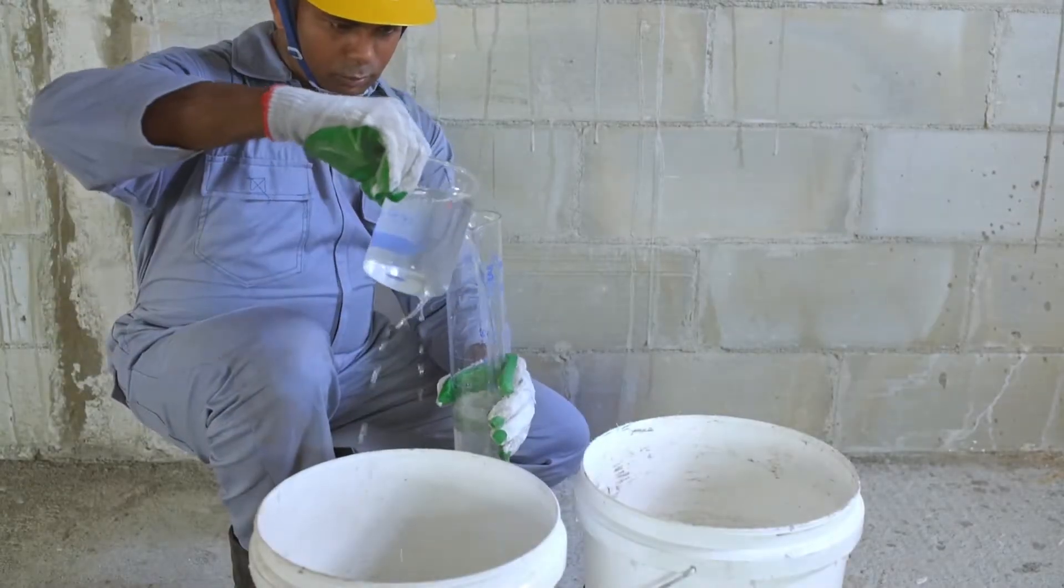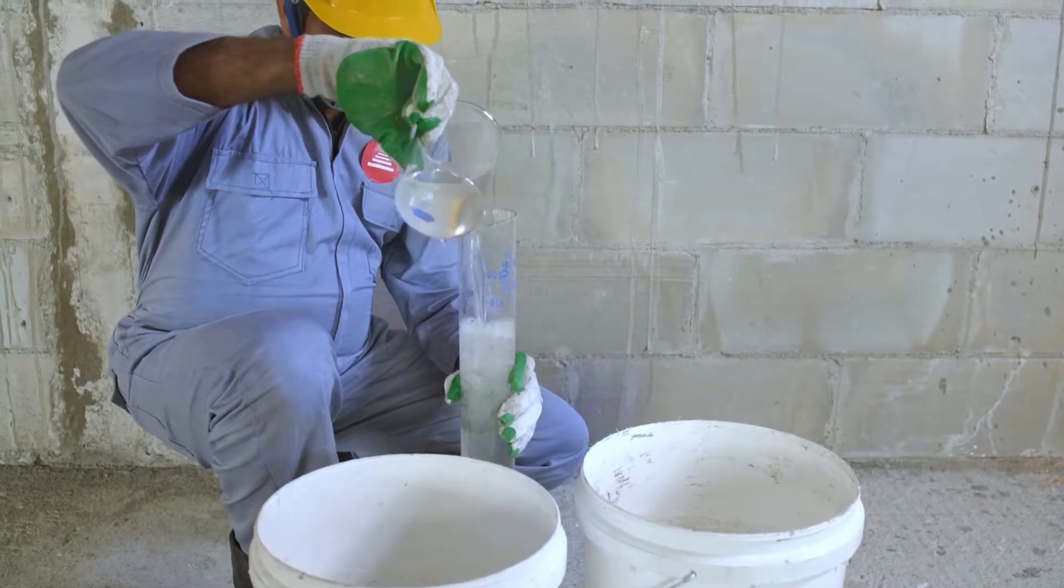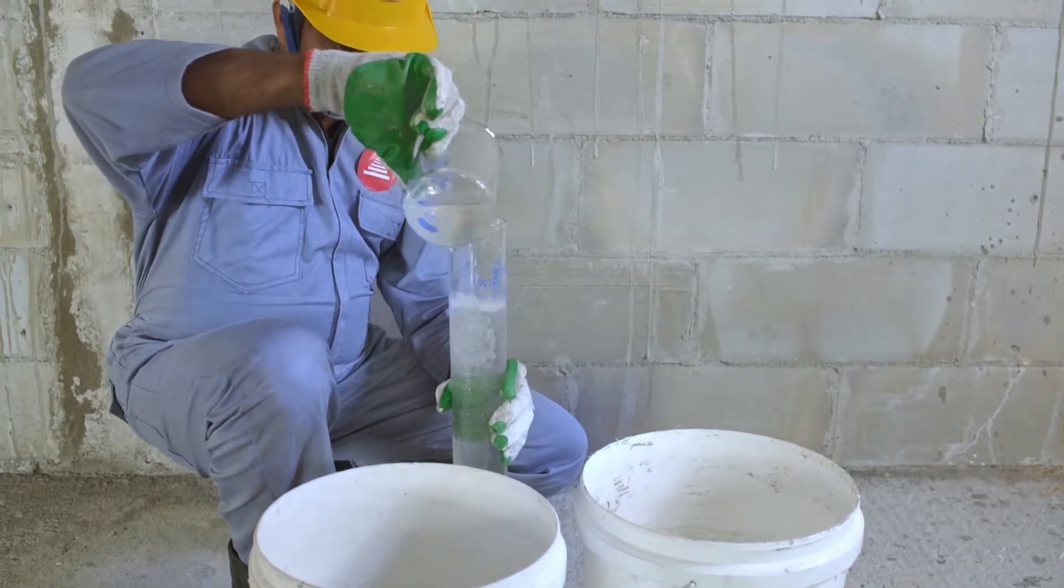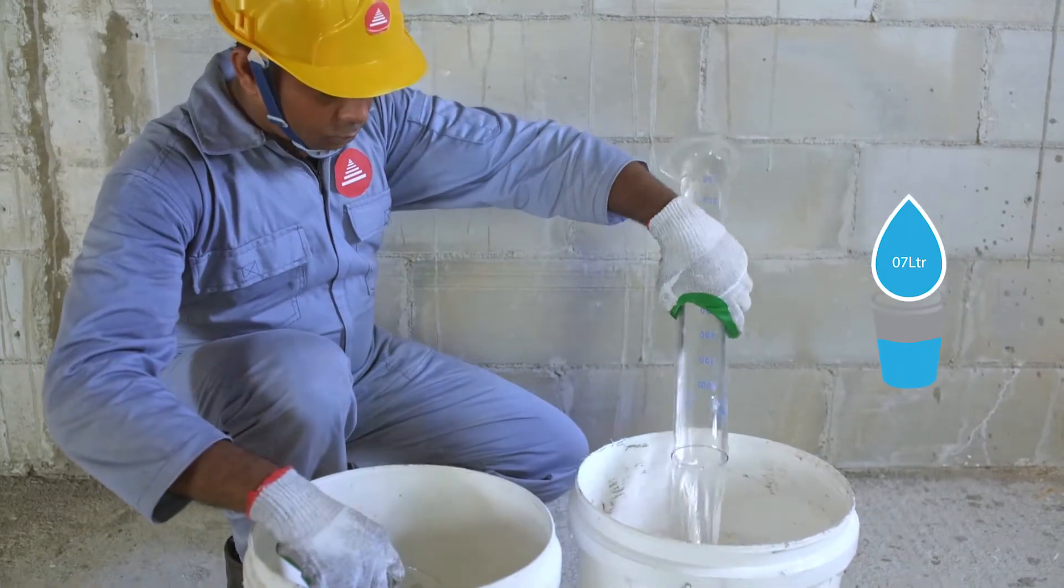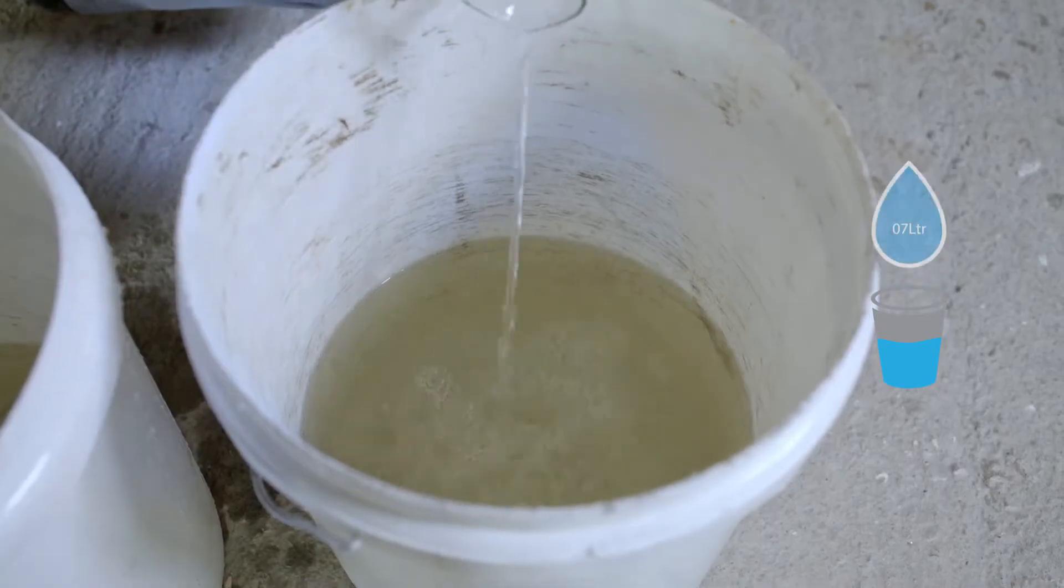Remember to only mix what you can apply within one hour of mixing. Now, let's look at how to prepare the Tokyo Supercast White Plaster Master for application. First, pour 7 liters of clean water into a bucket.